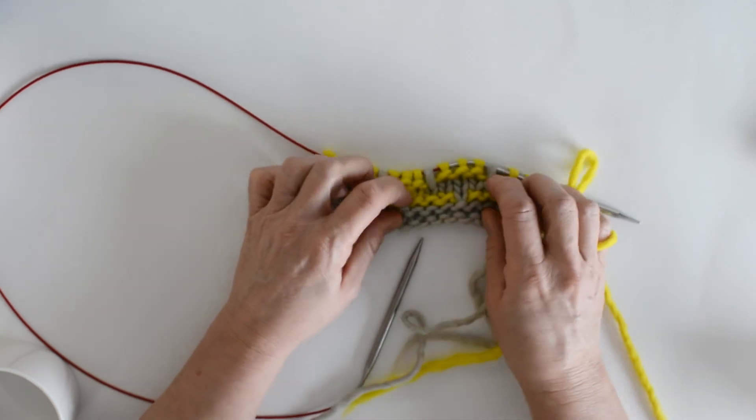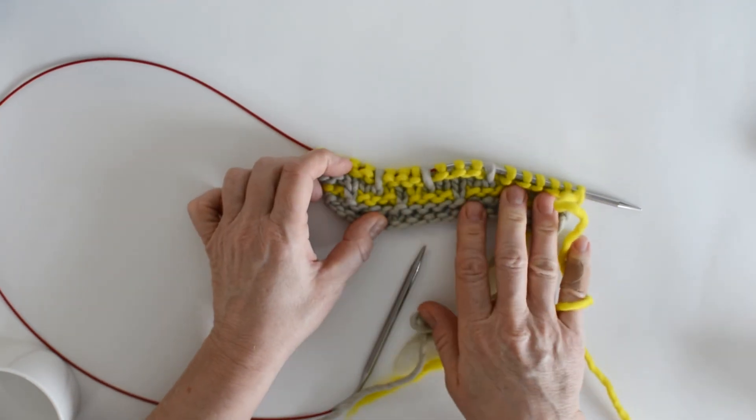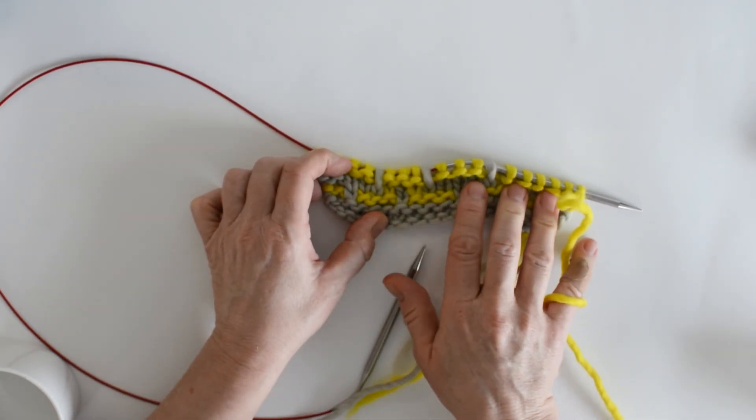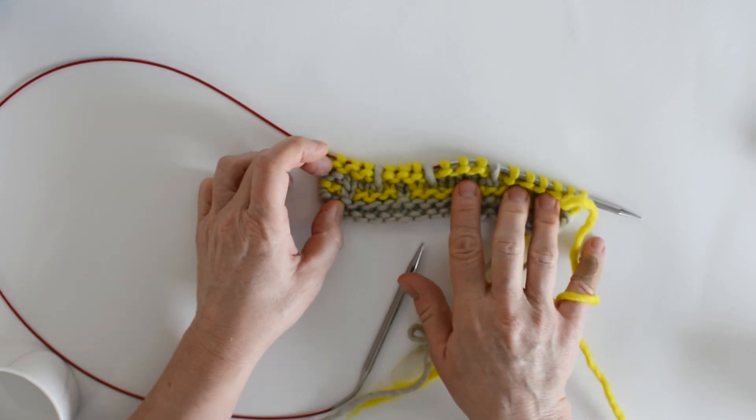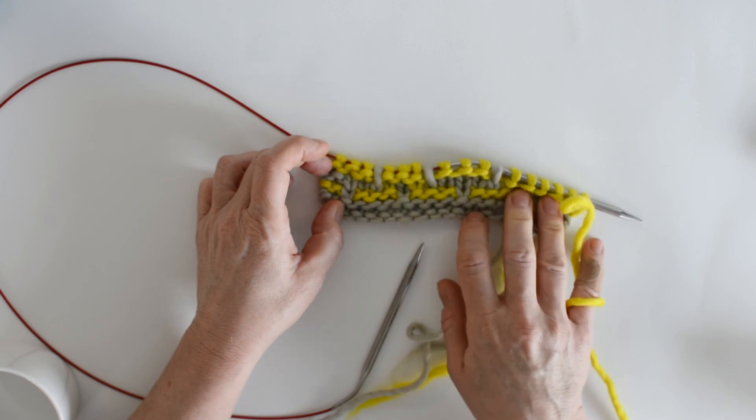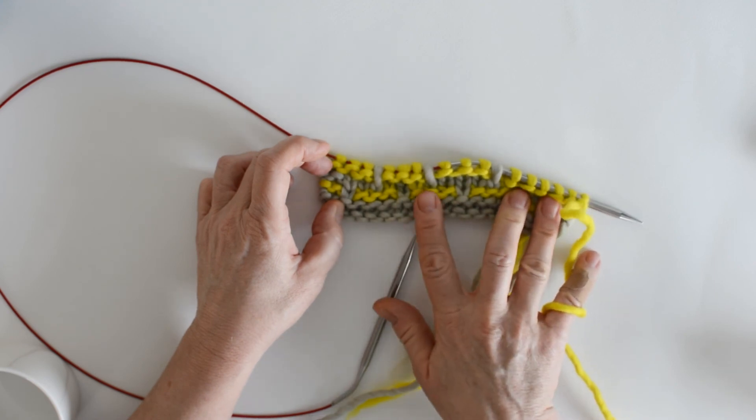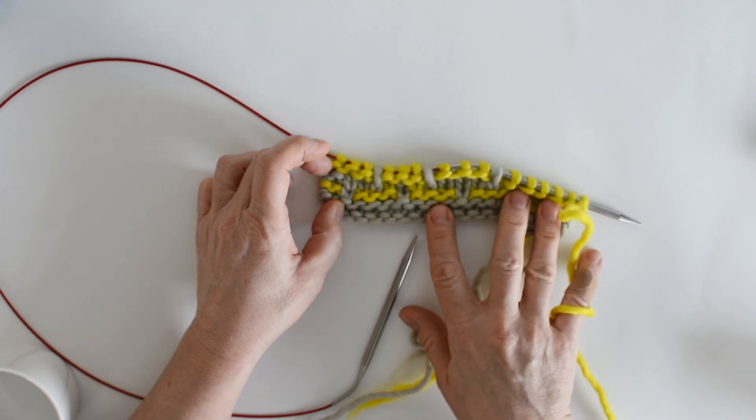So, here you can start to see the pattern emerging, the grey, which is where we purled on the wrong side rows, the yellow is a sort of flat little knit area, and the yellow is a ridge. It's a pretty little purl ridge.